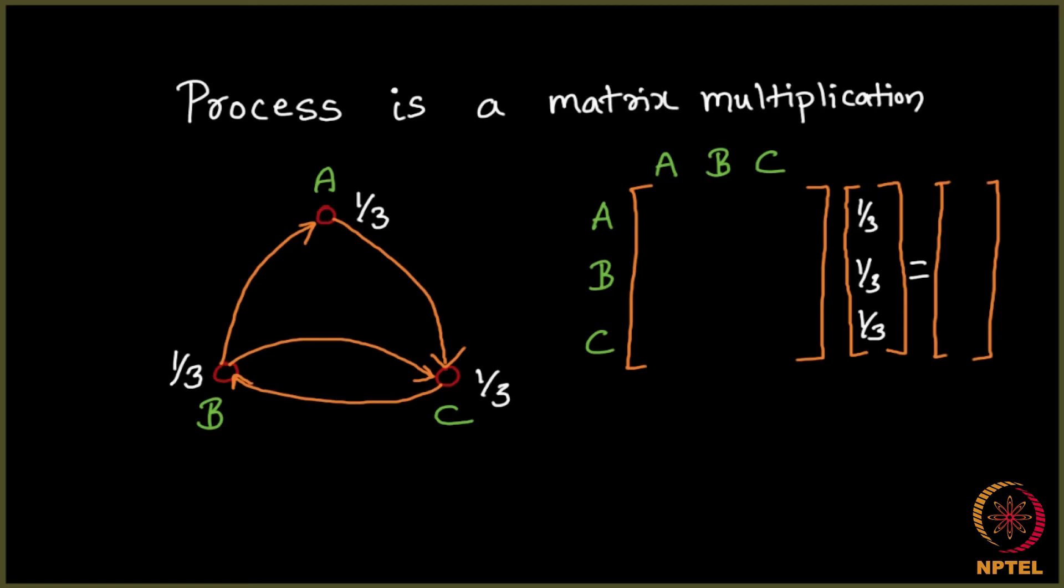We start with c being 1/3 plus 1/6. Why is that? It is because you have this c here. C has 2 incoming edges and from b, c gets - b gives half to a and half to c and c gets 1/6 from b and it gets 1/3 from a, correct?